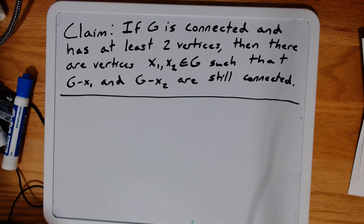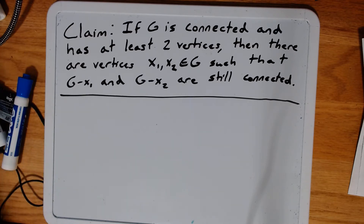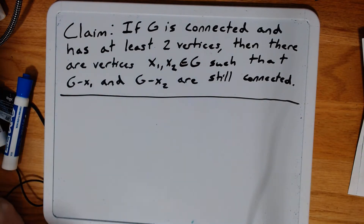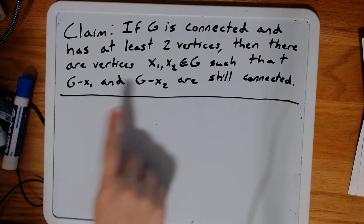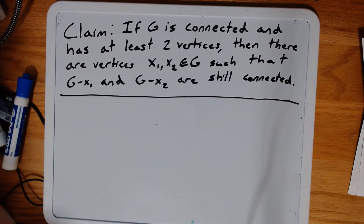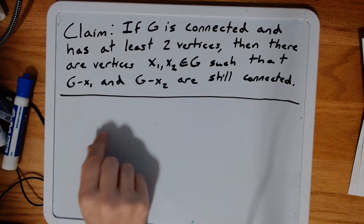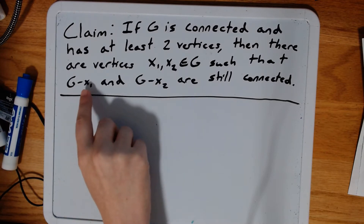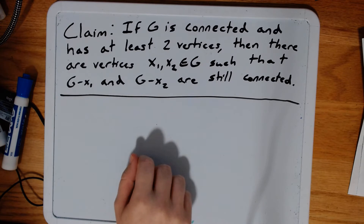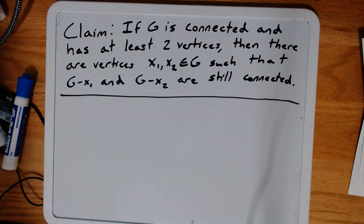If G is connected — meaning G is only one component where you can get from any vertex to any other by walking along edges — and G has at least two vertices, then there are two vertices x1 and x2 in that graph such that if we remove those vertices, if we look at the graph without x1 or the graph without x2, the remaining graph is still connected.